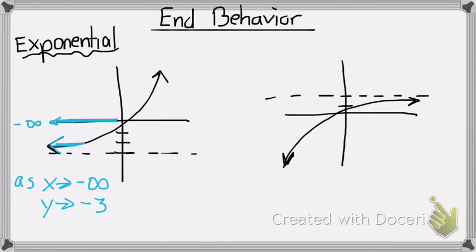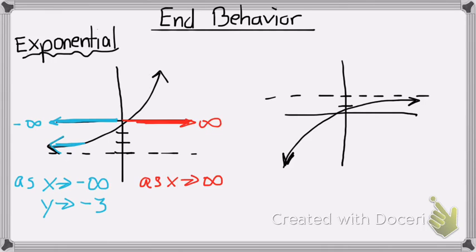Now let's see what the x values are doing on the right side. My x values are getting closer and closer to positive infinity. So, as x approaches positive infinity, let's see what the y values are doing. It's actually going up, so that means it's going up to positive infinity.